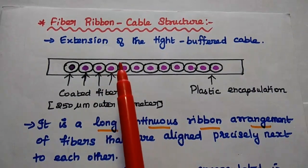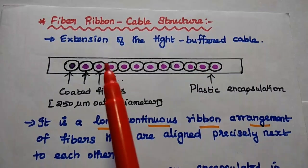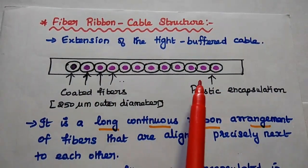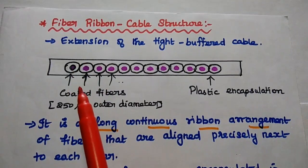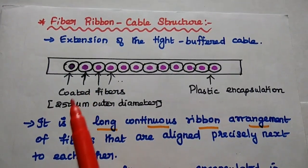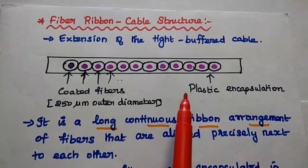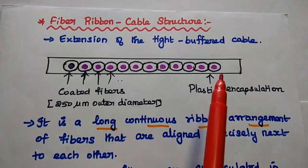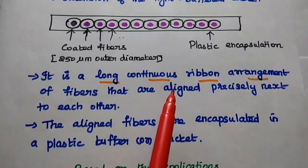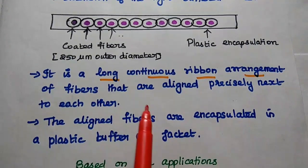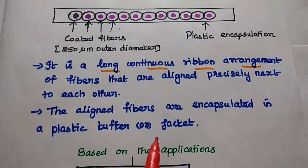Next is fiber ribbon cable structure. It is an extension of the tight buffered cable. It is a long continuous ribbon arrangement of fibers that are aligned precisely next to each other. Each fiber is a coated fiber to protect itself, using 250 micrometer as outer diameter. All fibers are encapsulated using a common plastic encapsulation. This is called a ribbon cable structure. The aligned fibers are encapsulated in a plastic buffer coating or jacket.